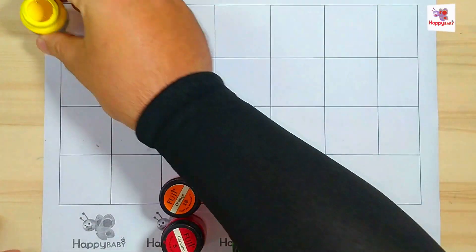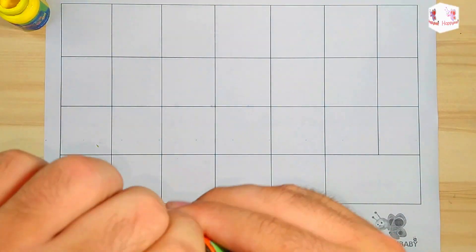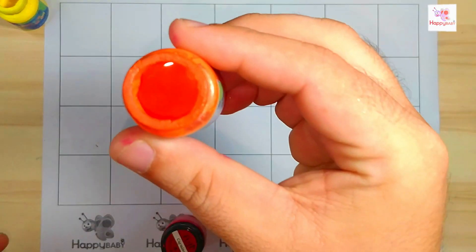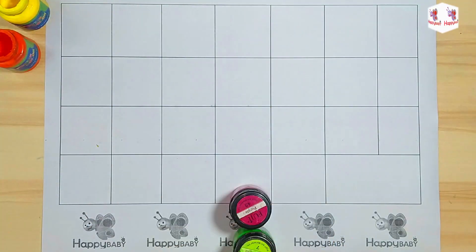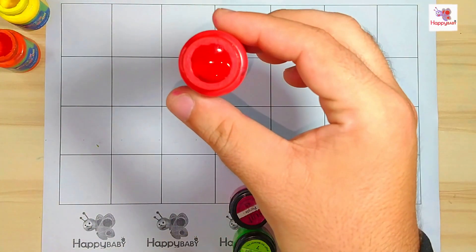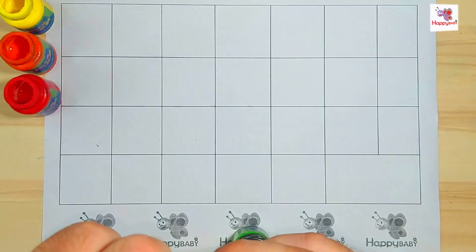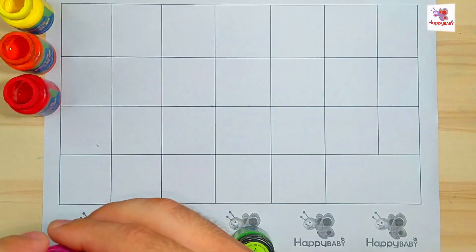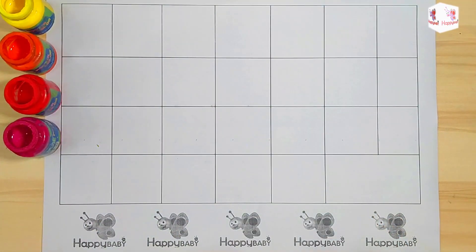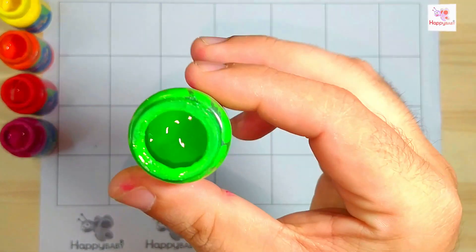Yellow color. Orange color, red color. Purple color. Green color.